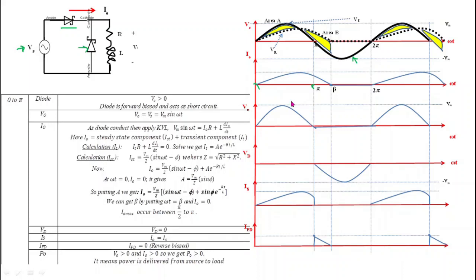From 0 to π, the positive half cycle of the sinusoidal wave is applied to the main diode. When the positive half cycle is applied, the main diode gets positive potential at its anode, becomes forward biased, and acts as a short circuit. During this positive half cycle, negative polarity reaches the anode of the freewheeling diode, so the freewheeling diode gets reverse biased. We conclude that from 0 to π, the main diode is short circuited and the freewheeling diode is open circuited.